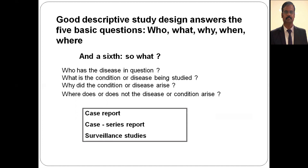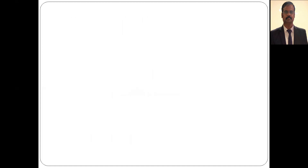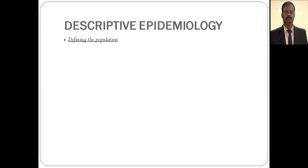Examples of descriptive studies include case reports, case series reports, and surveillance studies. A case report shows how a symptomatic presentation is presented by an individual. When similar atypical cases are studied among five to ten or more people, that becomes a case series report. Surveillance studies are done in the field. All three are examples of descriptive study designs.